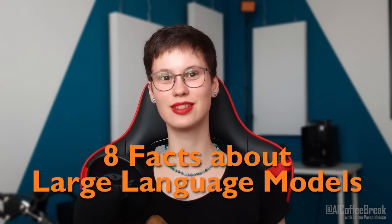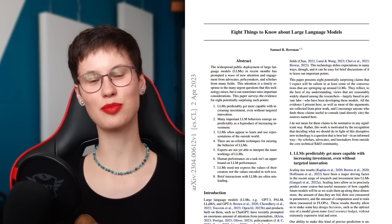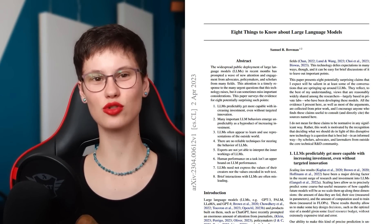Hi, let's talk about the elephant in the room — AI models like ChatGPT — by setting 8 facts about large language models straight. These ideas were presented in a paper written by Sam Bowman, who is an associate professor of data science, linguistics, and computer science at New York University. Me and Ms. Coffee Bean cannot agree more with the author, and we would like to spread his ideas to a wider public, one that does not regularly check arXiv for new scientific papers. We also added a ninth point at the end, which is a point that I wish everybody would know about large language models.